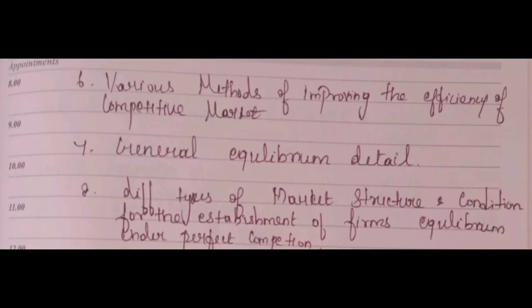Question 6: Various methods of improving the efficiency of the competitive market. Question 7: General Equilibrium in detail. Explain the types of market structure and conditions for the establishment of firm equilibrium under perfect competition. Different types of market structure.